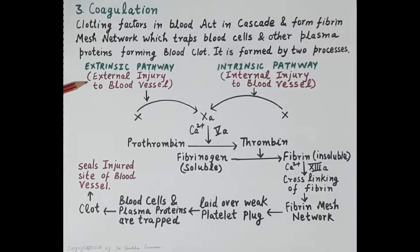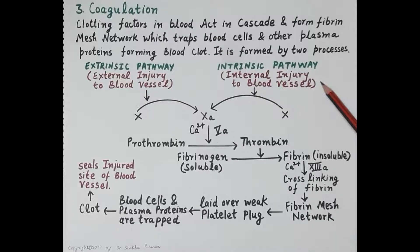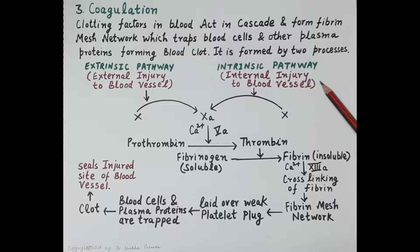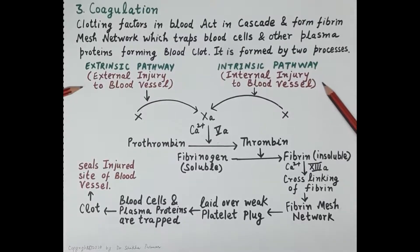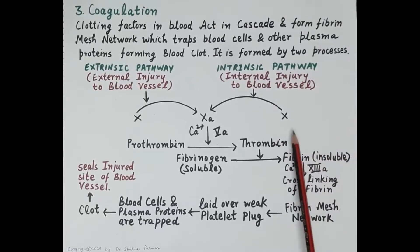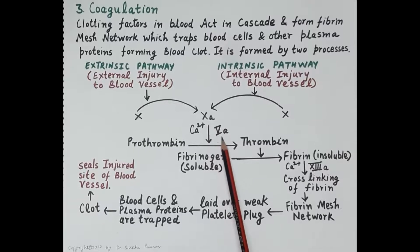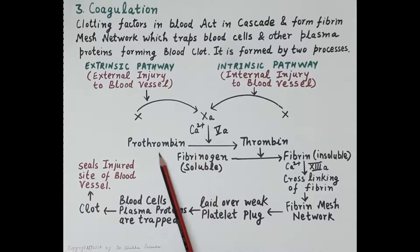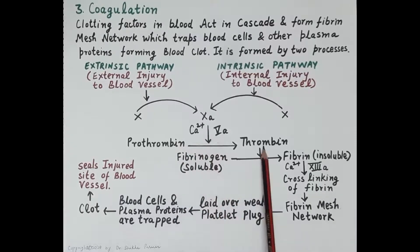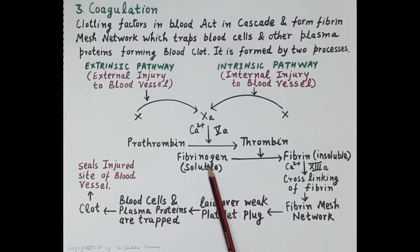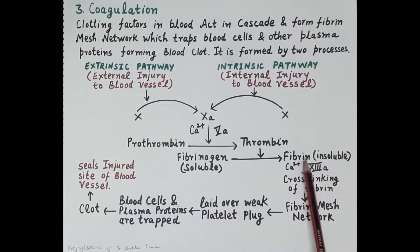The extrinsic pathway is initiated because of an external injury to the wall of the blood vessel, for example due to trauma. The intrinsic pathway is initiated because of internal injury to the vessel wall — the endothelium is injured, the sub-endothelium is injured, the collagen gets exposed, and when collagen comes in contact with the blood, it initiates clotting. In both pathways, there is activation of clotting factor 10. Activated factor 10, in the presence of activated factor 5 and calcium ions, converts prothrombin to thrombin.